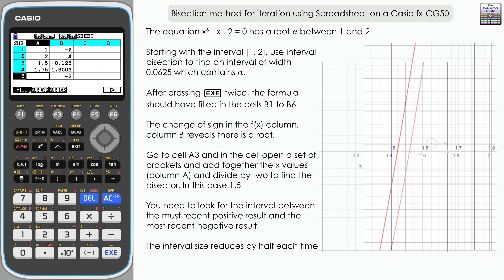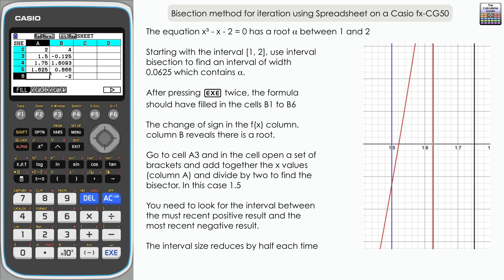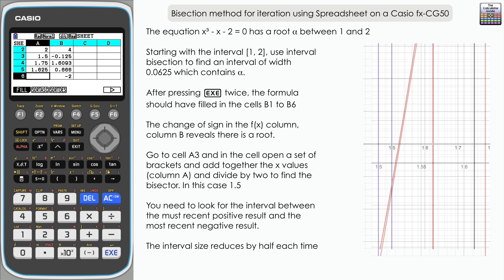For the third iteration in cell A5: open brackets, 1.5 plus 1.75, close brackets, divided by 2. We've got 1.625, which gives a value of 0.666 — positive. From the graph the root lies in the interval between 1.5 and 1.625. So 1.5 was the most recent negative result at minus 0.125, and 1.625 is the most recent positive result at 0.666.